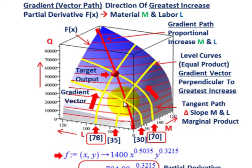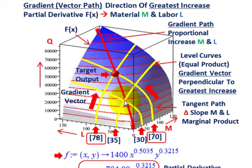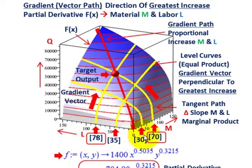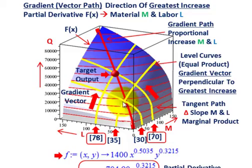Looking at these gradient paths, I have inputs here at 35 labor and 30 material. They're intersecting approximately on the gradient path, that red path. That would be a good point as long as you're intersecting there in a combination of labor and material. For our targeted output, I've already done a linear program on it. Based on my constraints, a combination of 78 units of labor and 70 units of material is going to intersect at my targeted output. So what we have to do is first determine these gradient vectors.